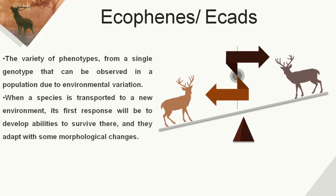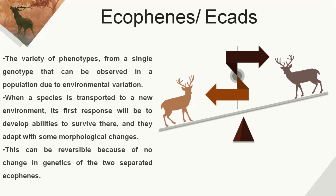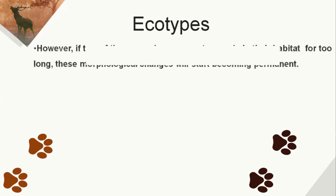When a species is transported to a new environment, its first response will be to develop abilities to survive there, like the melanin secretion in the warm condition. They adapt with some morphological changes. These changes can be reversible because there are no genetic changes involved — the two separated ecophenes still belong to the same species.